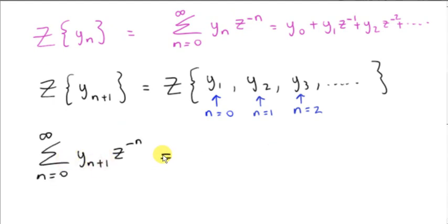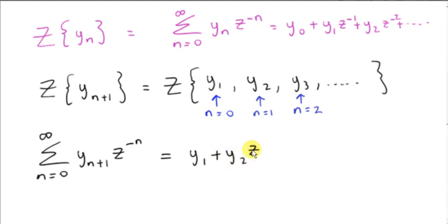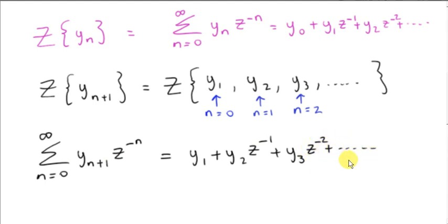If we put 0 in for n, we get y1 times z to the power of 0, which is just 1. Next, putting 1 in for n, we get y sub 2 multiplied by z to the power of minus 1. Then putting 2 in for n, we get y sub 3 times z to the power of minus 2, and so on.